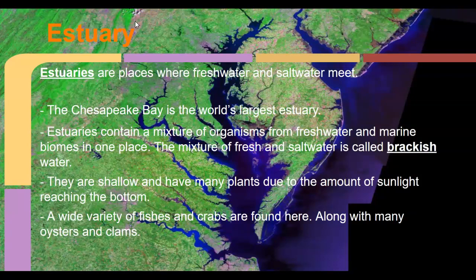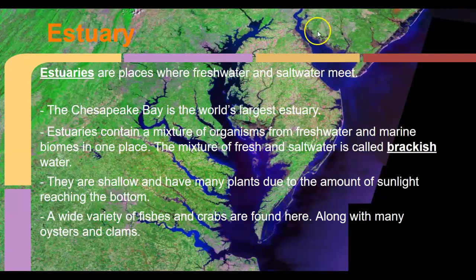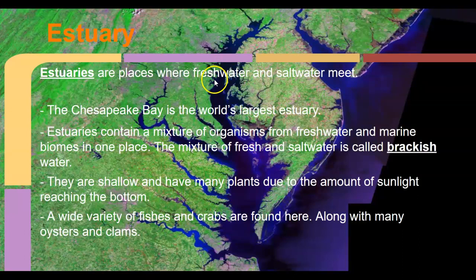An estuary is where fresh water and salt water mix. The mixture of fresh water and salt water is called brackish. The Delaware Bay is a fairly large estuary. The largest estuary on earth is the Chesapeake Bay, which is fed by the Susquehanna River.